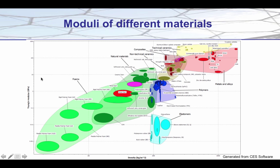What I've plotted up here is the Young's modulus of all the different types of materials. This is a log plot plotted against the log of the density, generated using the CES software which you will be using in your design component of this unit. From this plot we can see at a glance all the different groupings of the materials — metals, ceramics, composites, polymers, natural materials, foams, and elastomers. What's changing here are the strength of the bonds and the directionality of those bonds.